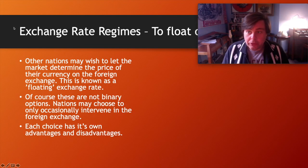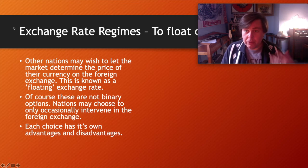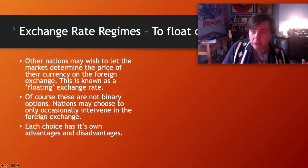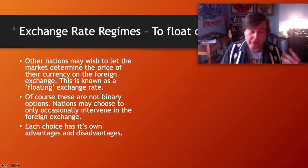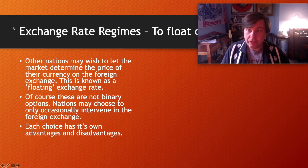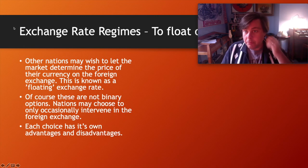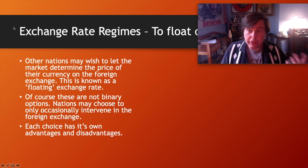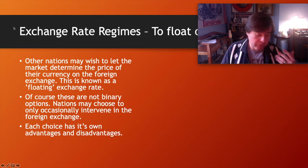Some nations choose to float their currency — for example, the US dollar floats in the foreign exchange market, so its price in terms of euros or Japanese yen is determined by relative supply and demand. Other nations, such as Saudi Arabia, the United Arab Emirates, and to some extent China, fix their exchange rates. That price is a matter of government policy, and it's something they have to maintain every day.